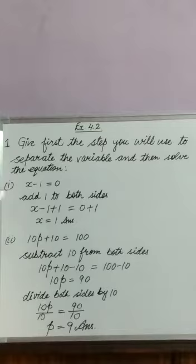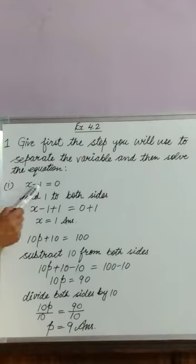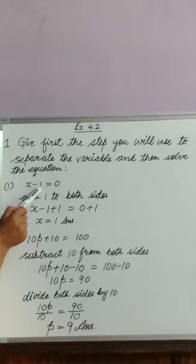Now first question is: x minus 1 is equal to 0. Here x is the variable and 1 is the constant number. 1 is subtracted here. Opposite of subtraction is addition, add same constant number to both sides.